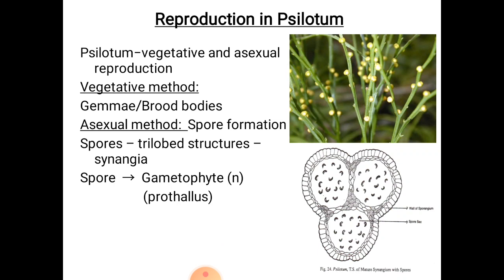The vegetative method takes place by means of gemmae or brood bodies. These gemmae are minute, ovoid, multicellular outgrowths which arise from the rhizomes of Psilotum nudum. They are thin-walled and contain lots of starch grains as reserved food material. They detach from the mother plant and develop into new individual plants of Psilotum.